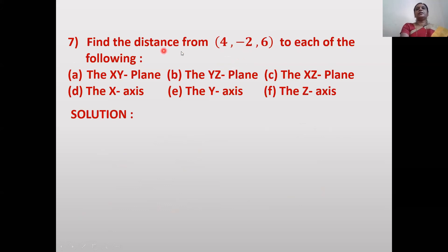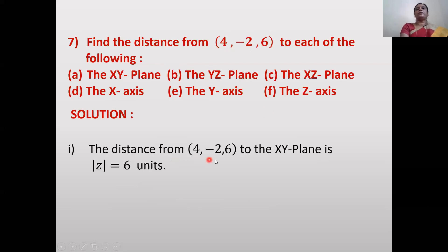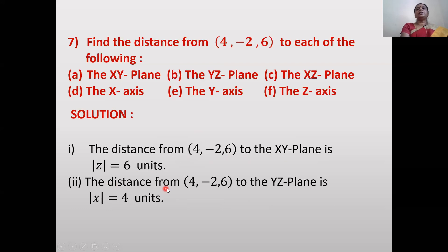Next problem: Find the distance from point (4, -2, 6) to each of the following planes and axes. Distance to the XY plane = |z| = 6. Distance to the YZ plane = |x| = 4 units.